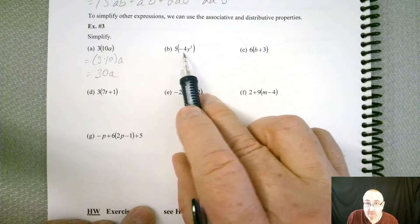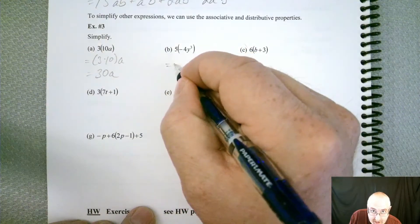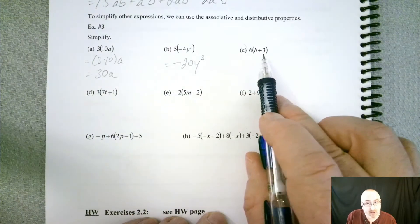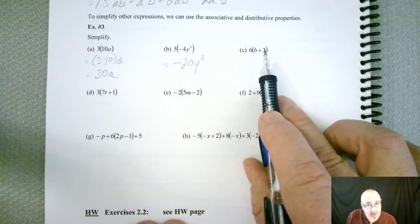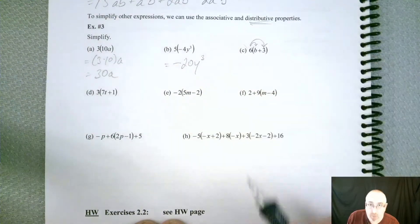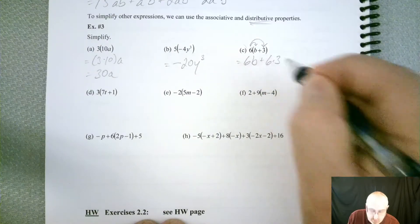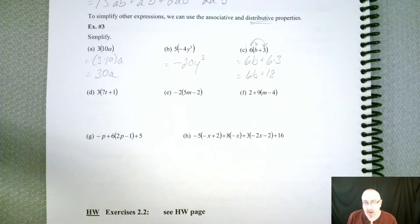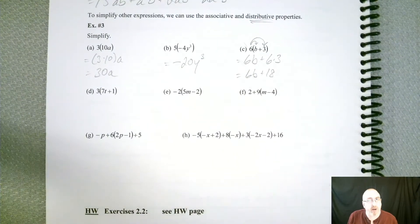All right, same idea here. We have five times a negative 4y to the third power. Just like the first one, we can combine those two numbers by multiplying. So we should get a negative, yeah, negative 20y to the third. All right. Now, this next one is a little different because now we're not multiplying like we are in here and here. These are being multiplied. This is being added. So we've got to treat this one differently. And we treat it differently by using the distributed property. So we're going to take this 6 and distribute it to both of those numbers. So we can do this in two steps. So we'll say 6 times b plus 6 times 3. Now, 6 times b is still 6b, but 6 times 3 better be 18.